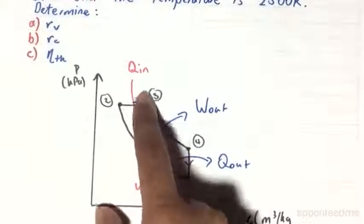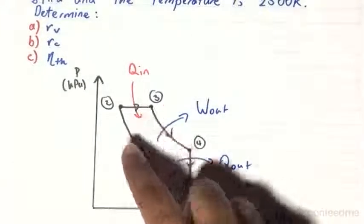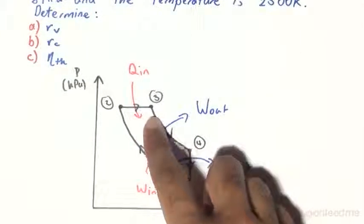Process 2, 3 is when we are going to put in some heat addition, and that is going to be the isobaric.